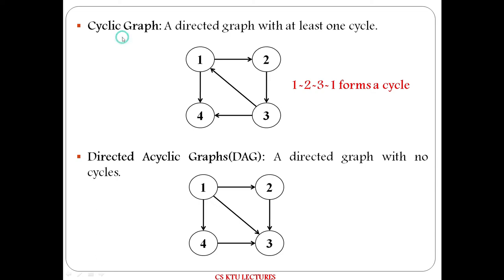Next is the cyclic graph. In a directed graph, 1, 2, and 3, and back to 1 form a cycle. If a graph has a minimum of one cycle, it is called a cyclic graph.